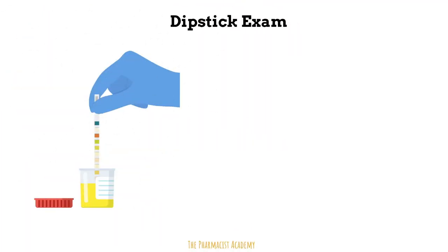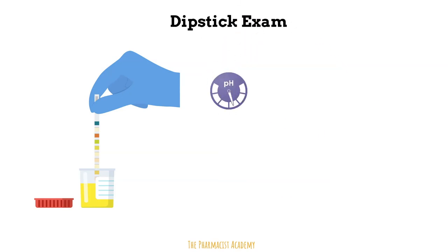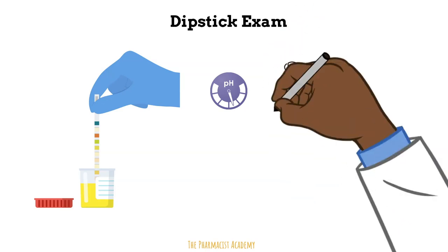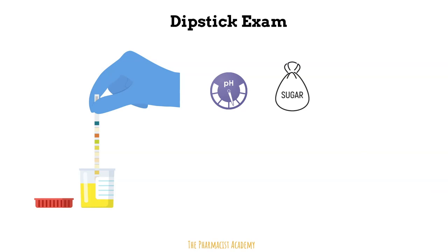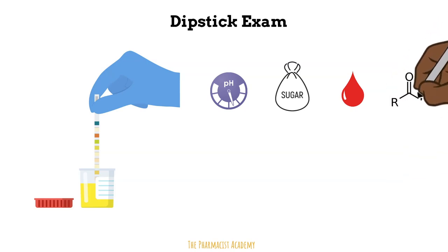The visual exam gives you an idea of possible problems, but the dipstick exam is more accurate. It assesses the patient's urine pH, and imbalances may be due to kidney disease. Elevated glucose levels in the urine should prompt a follow-up for a diabetes workup. The test can also detect blood and ketones, which most commonly are associated with ketoacidosis, uncontrolled diabetes, and keto diets.